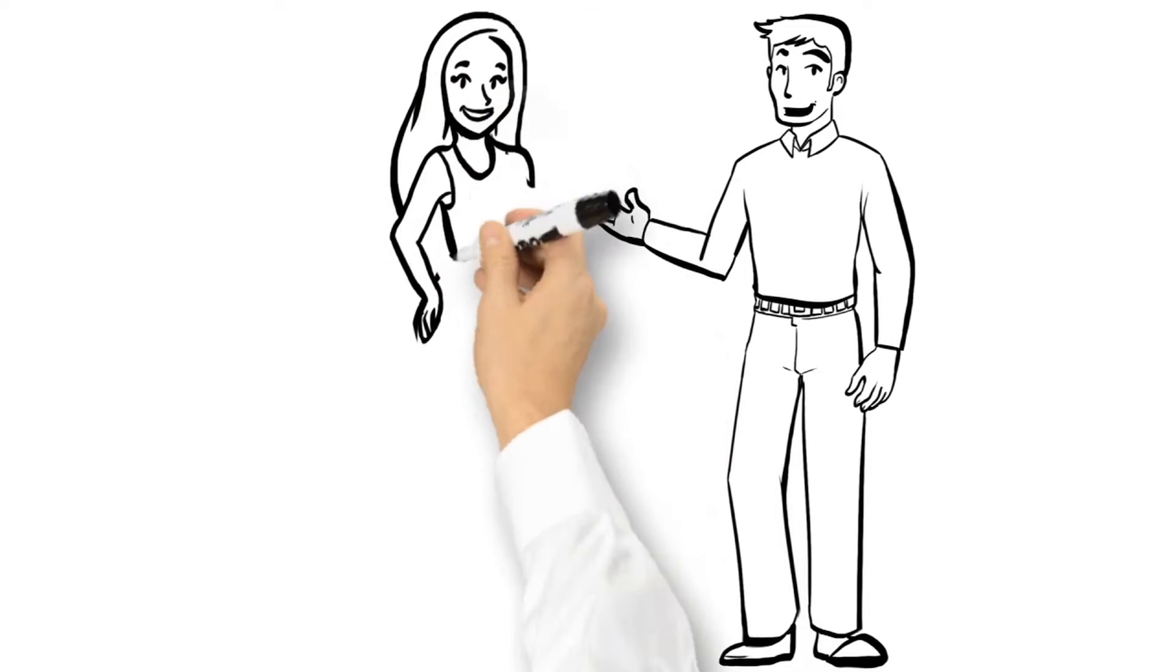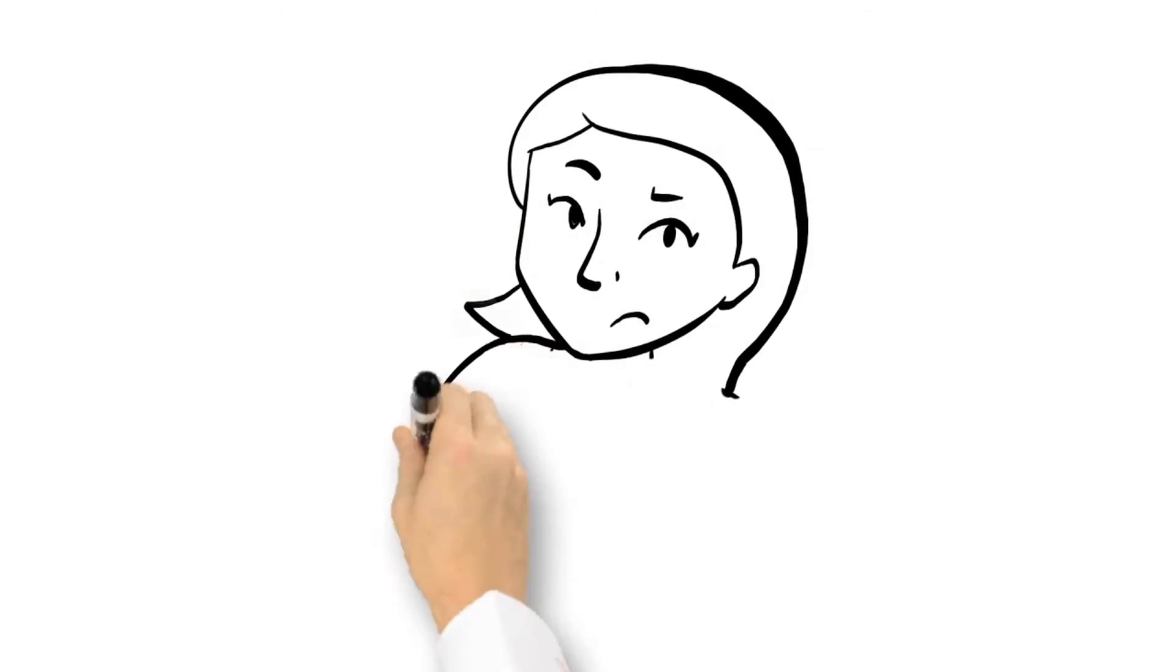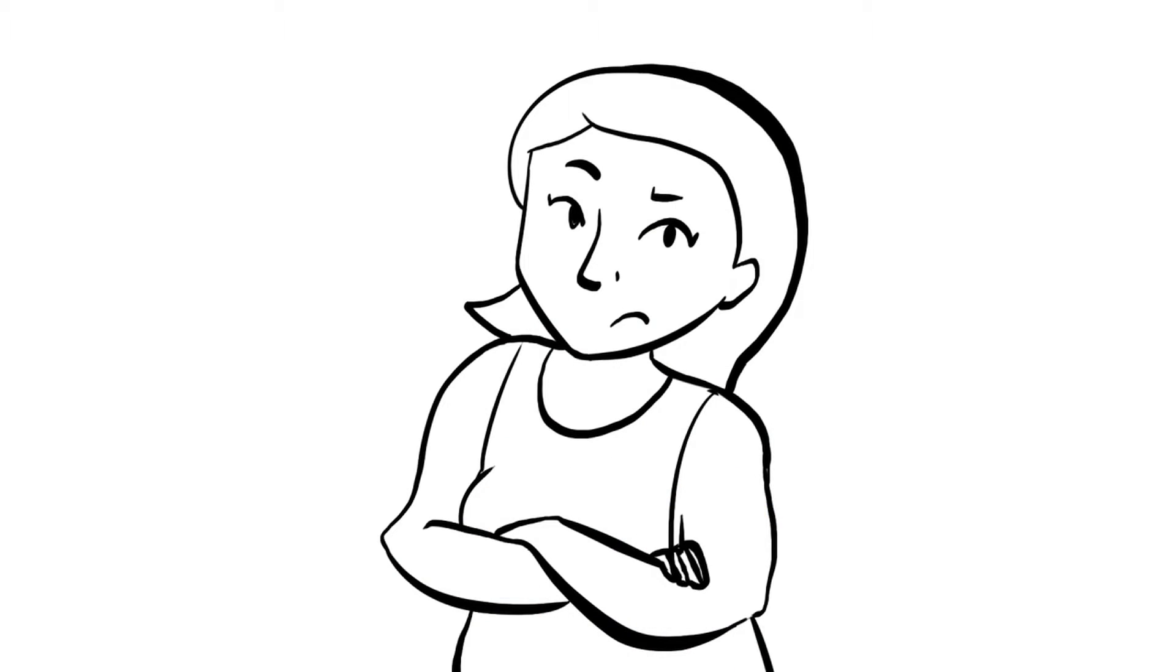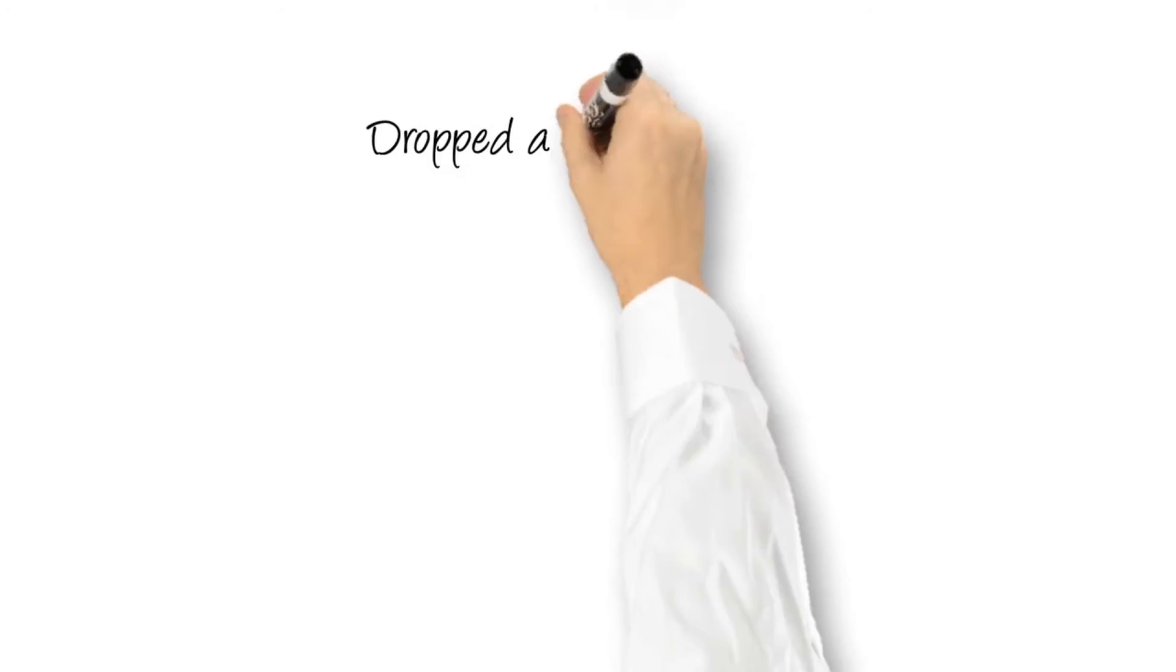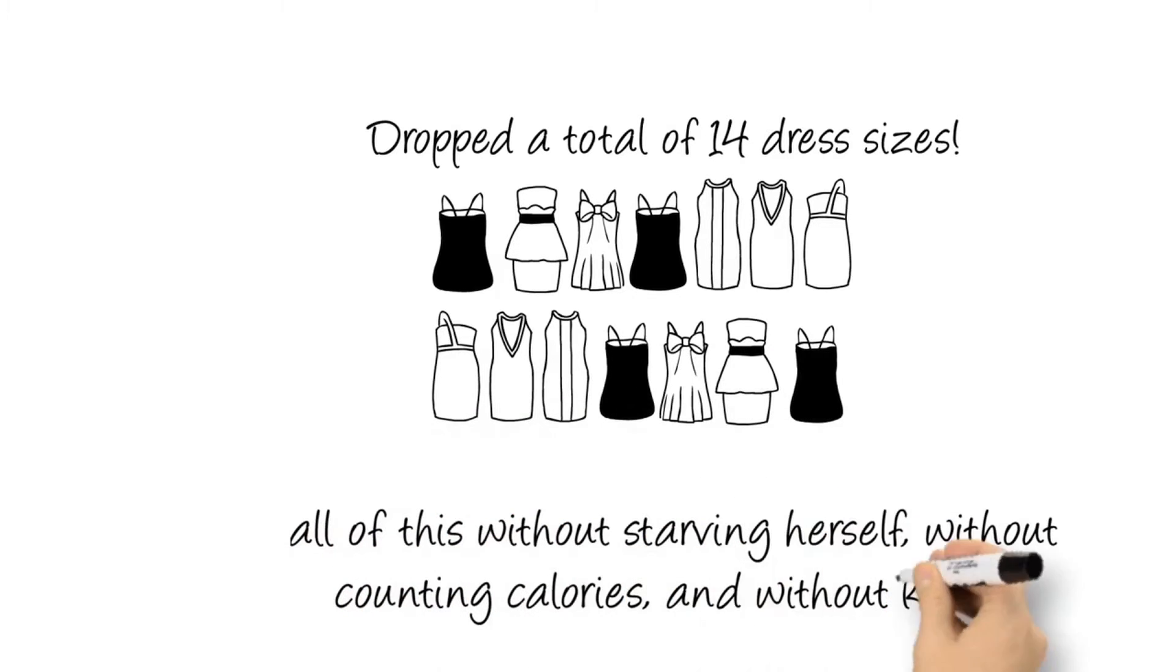At age 31, she now wears a smaller dress than she did back in high school. Sure, I know you're probably skeptical, and I certainly can't blame you. I mean, it sounds like something so dramatic that it must come right out of a supermarket tabloid, right? But it doesn't. Charlotte went on to drop a staggering 14 dress sizes. Yeah, 14. And she achieved all this without starving herself. Without counting calories. And without killing herself at the gym.